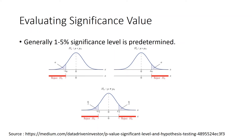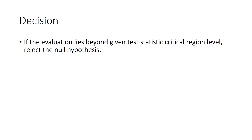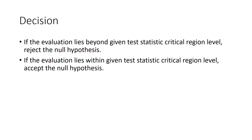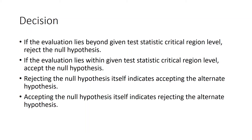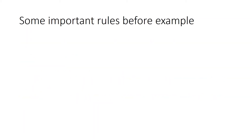The last step is the decision. If the evaluation lies beyond the given test statistic critical region level, we reject the null hypothesis. If the evaluation lies within the critical region level, we accept the null hypothesis. Rejecting the null hypothesis itself indicates accepting the alternate hypothesis, and vice versa — accepting the null hypothesis indicates rejection of the alternate hypothesis.